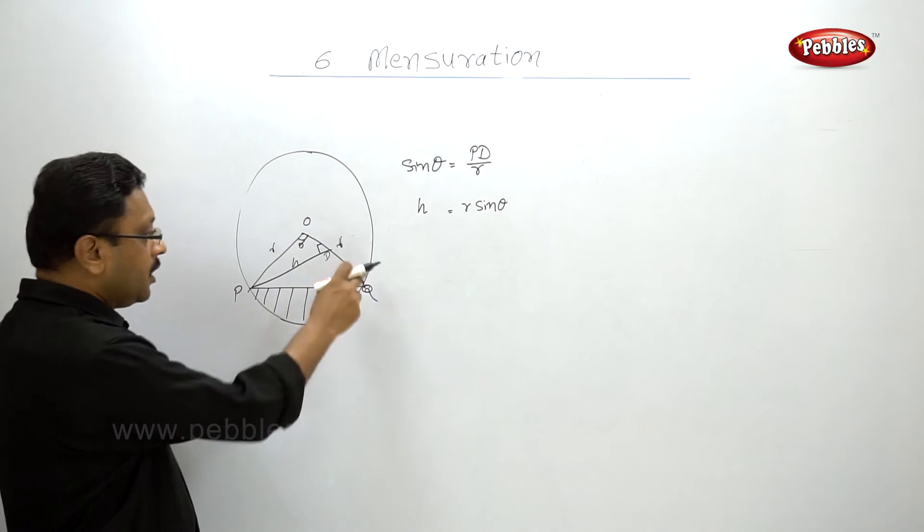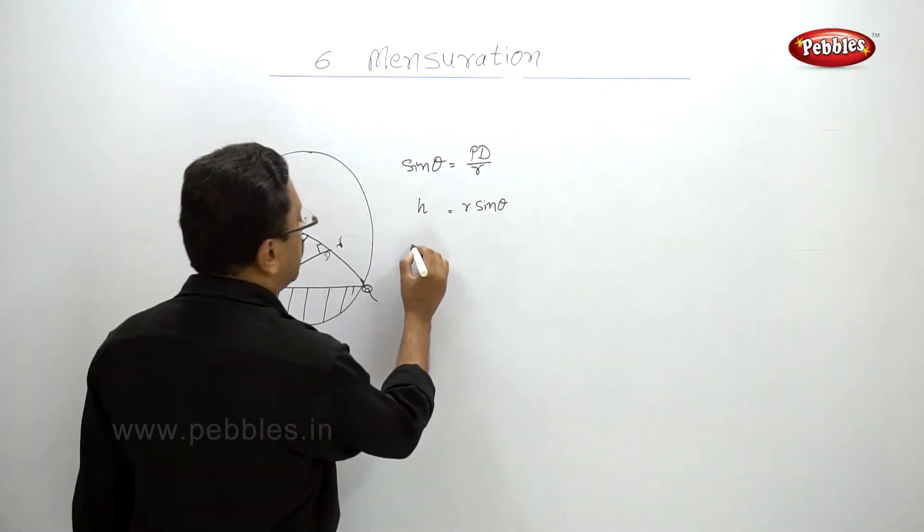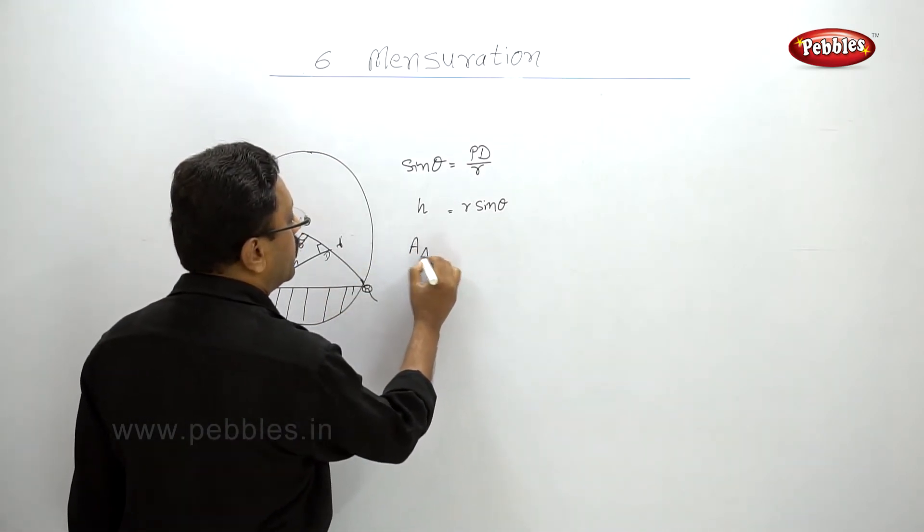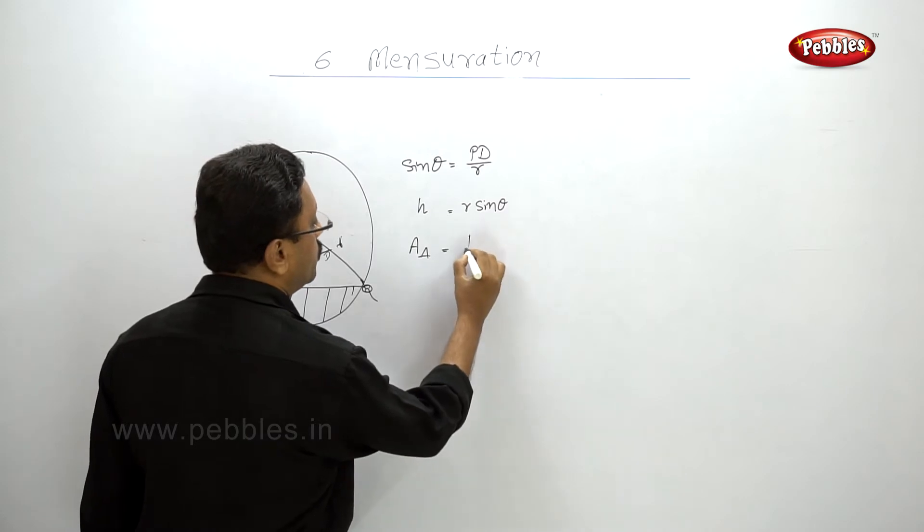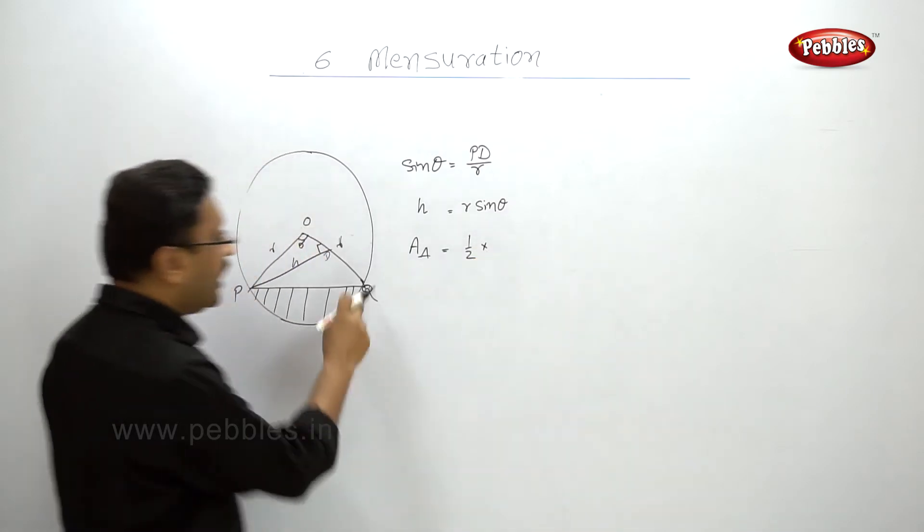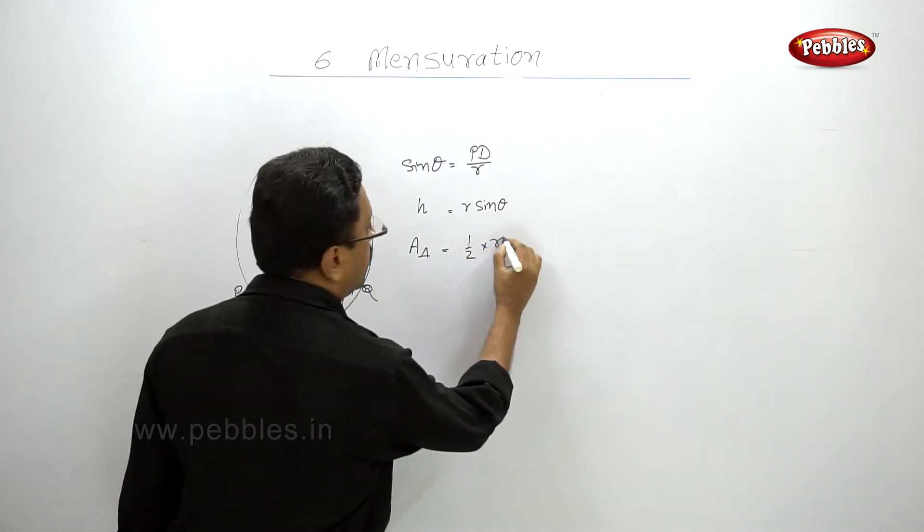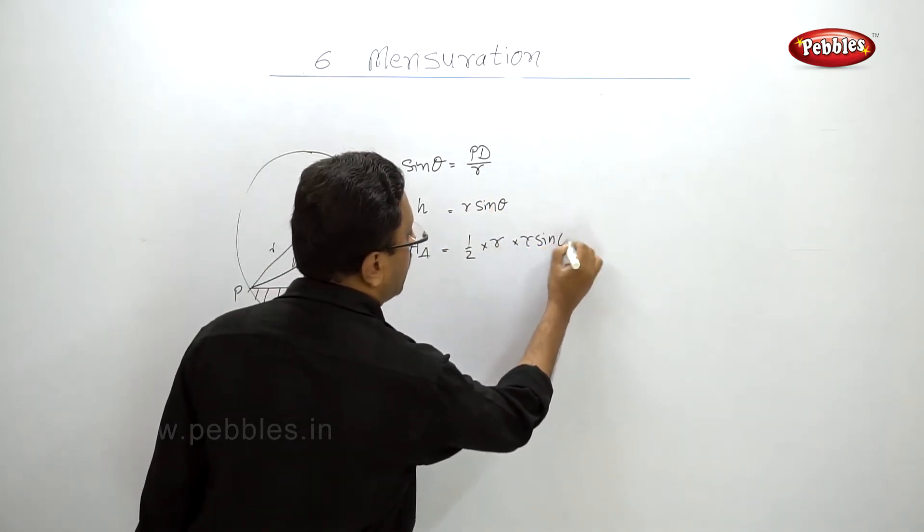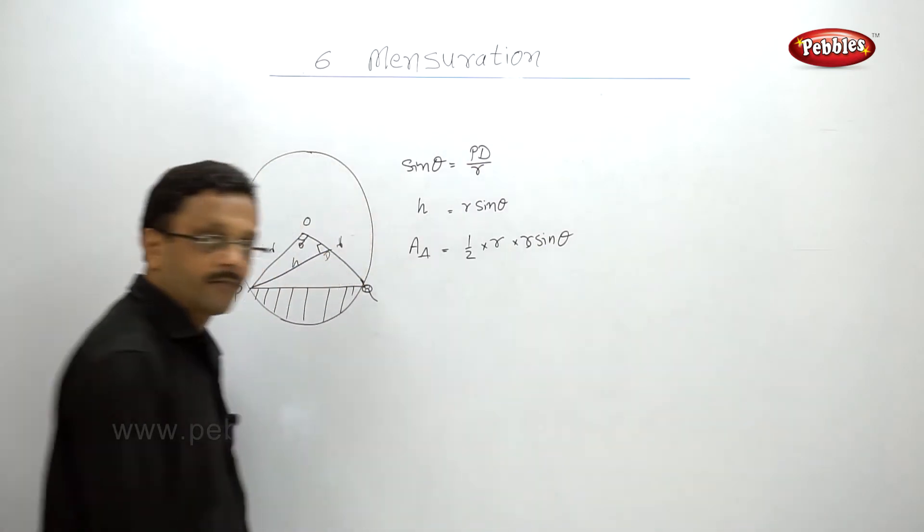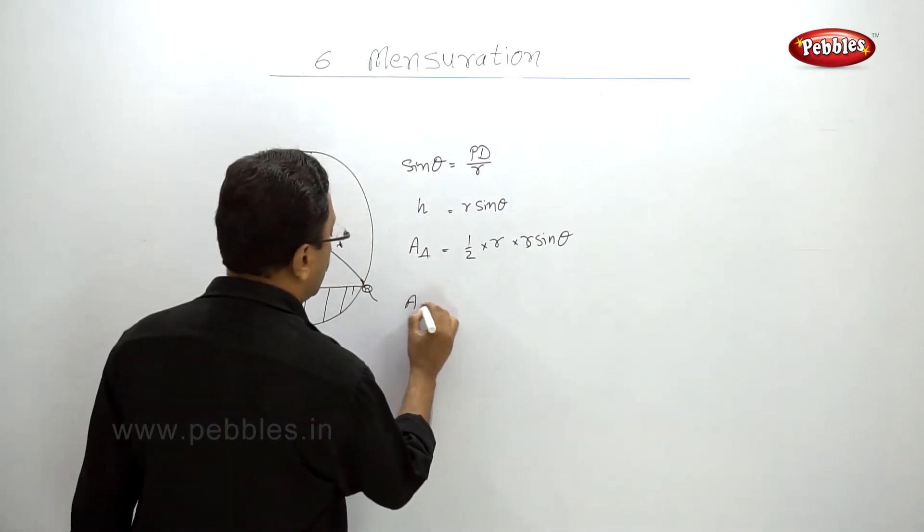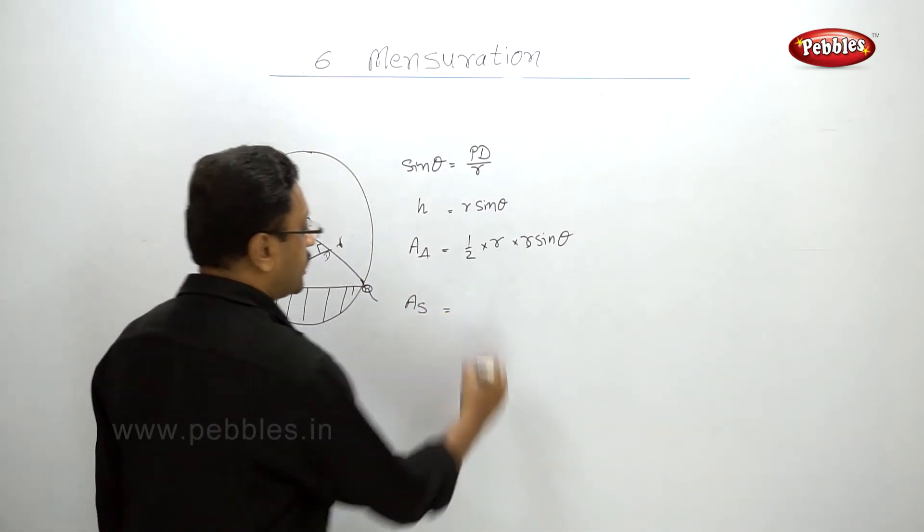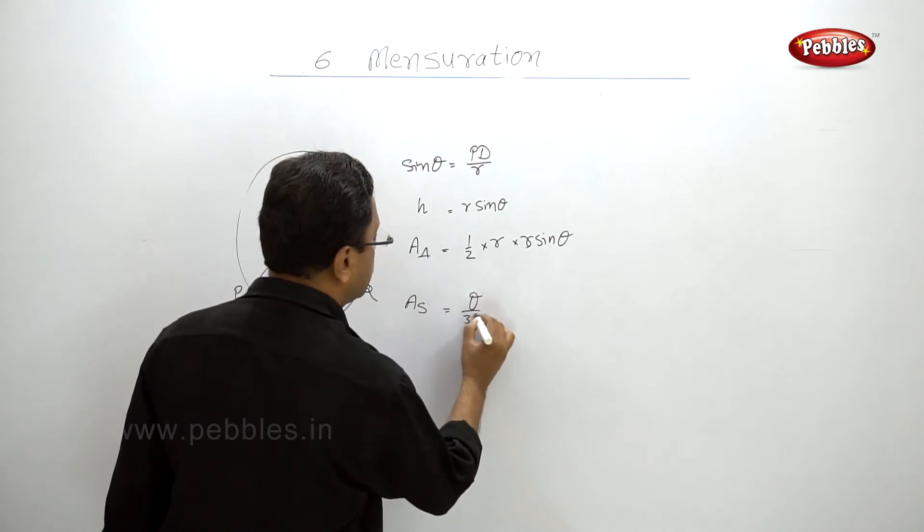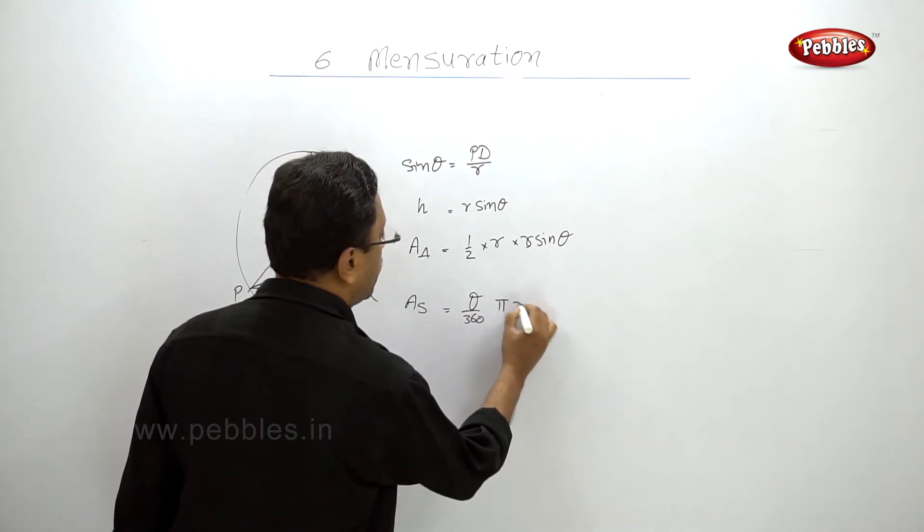So what is the area of triangle? Area of triangle is equal to half base is R and height is R sine theta. And what is the area of sector? Area of sector is theta by 360 pi r square.